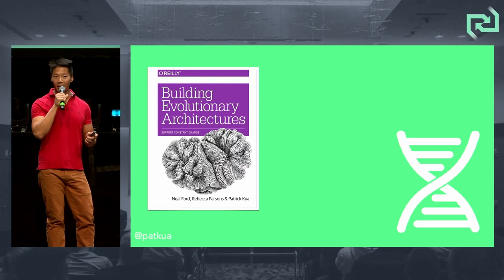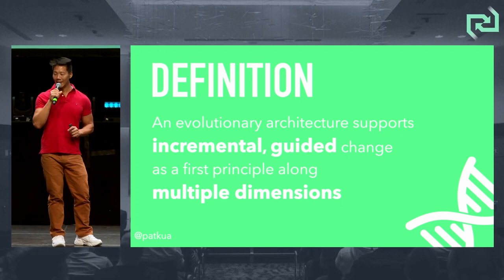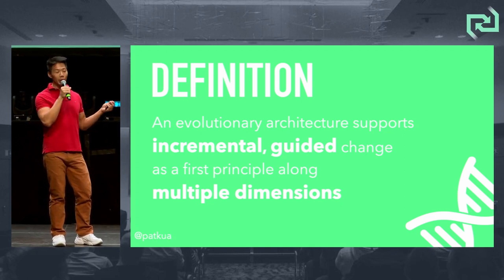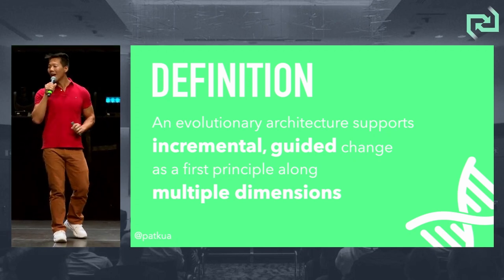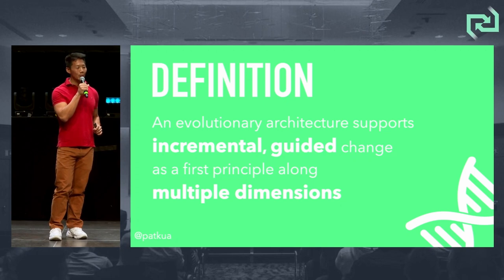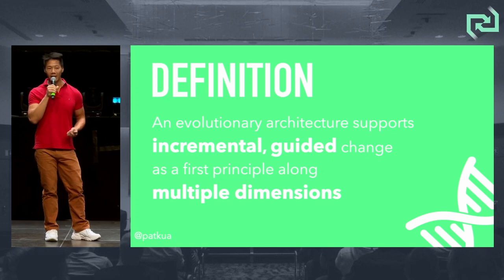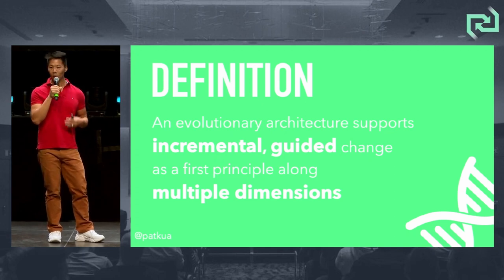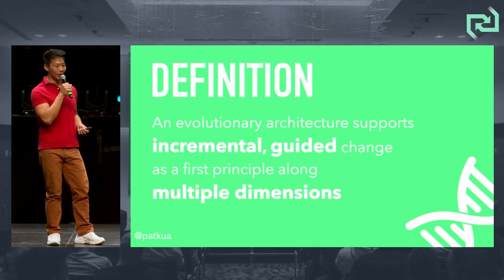Yesterday Rebecca talked about what is an evolutionary architecture. For those of you who weren't here, the definition is: an evolutionary architecture supports incremental, guided — not emergent — change as a first principle among multiple dimensions. There's something about intentionality that's really important, and this is one of the reasons we want to talk about fitness functions, which are your mechanism as architects to guide architecture intentionally.